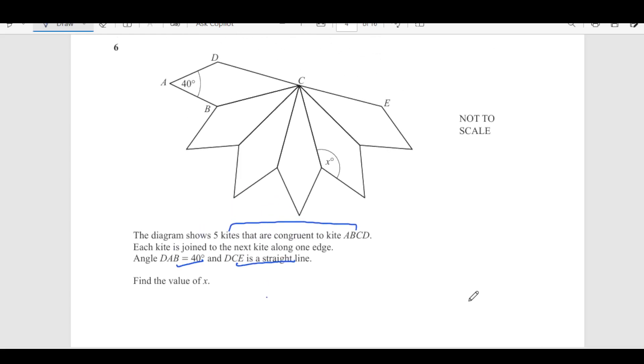This is 3 marks question. Now, as all these kites are congruent, so if this angle is 40, so this is also going to be 40, this is also 40, this is also 40 and this is also going to be 40. And if this is the kite, this angle is x and this is also going to be x. Now if we know this angle, then we can find out.